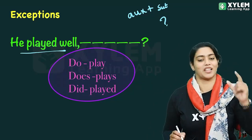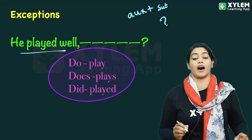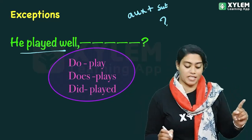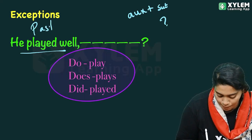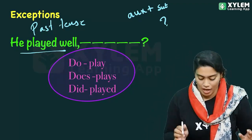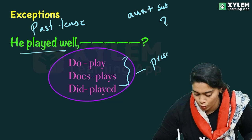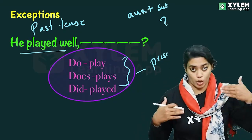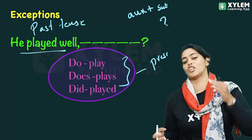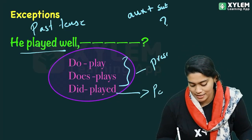So we create the tag using do, does, or did. If the verb is past tense, we use 'did.' For present tense, we use 'do' or 'does.' For example, 'Do you like ice cream?' or 'Do you want to go there?' — these use 'do.' For past tense, we use 'did.'